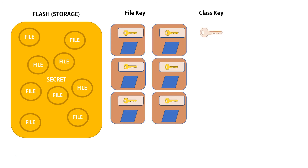Every file key is encrypted with a class key, and there are actually four different class keys. Depending on how secure the file needs to be, the file key is encrypted with one of four different class keys.